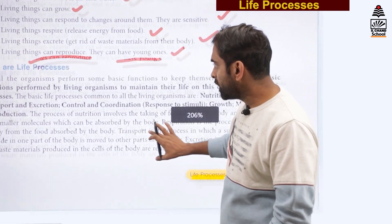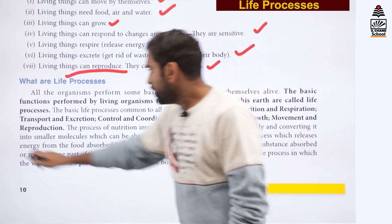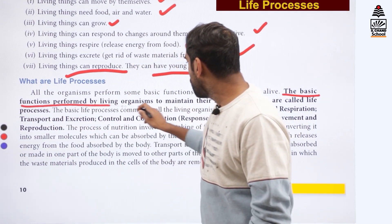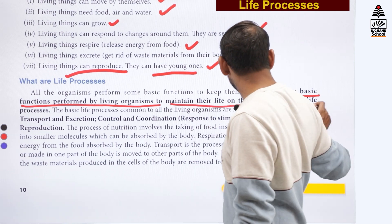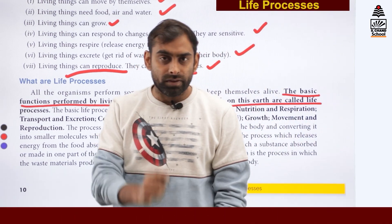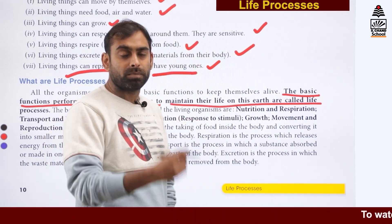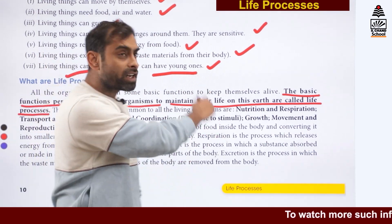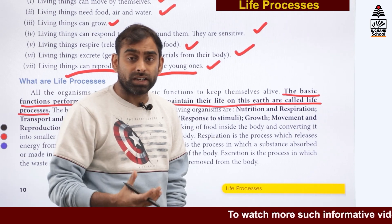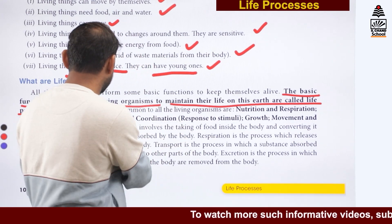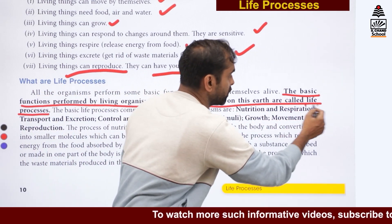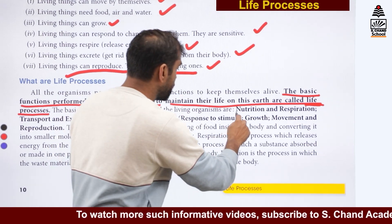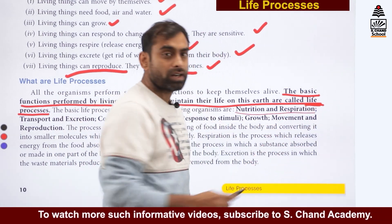What do we call them? Life processes — let us define them. The basic functions performed by living organisms to maintain their life on earth — all those processes performed by living organisms in their basic processes to be called living organisms — are called life processes.